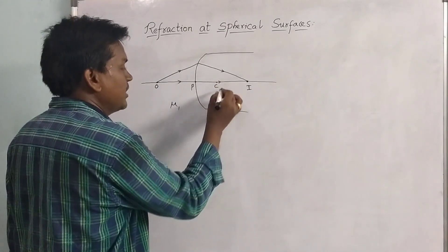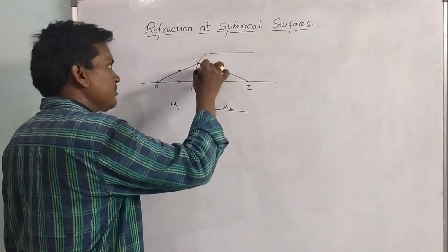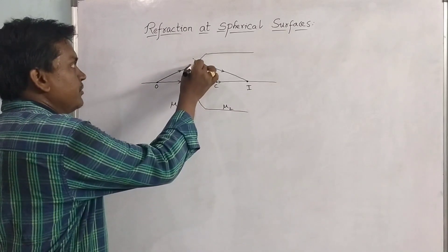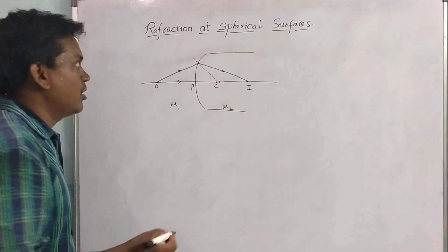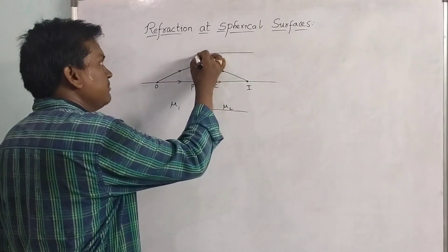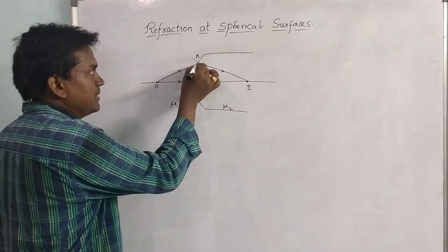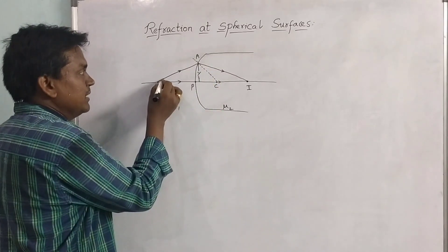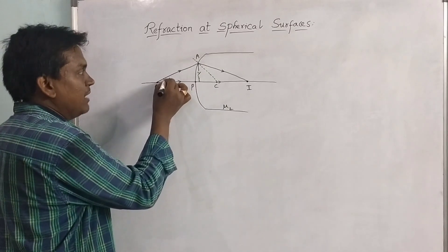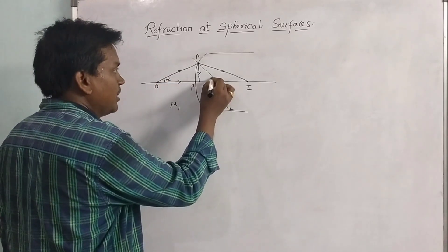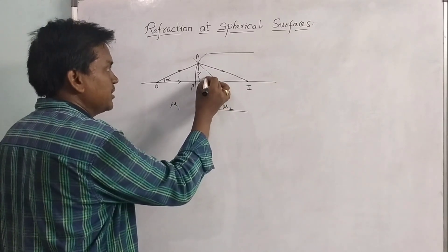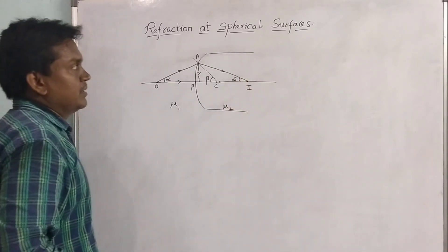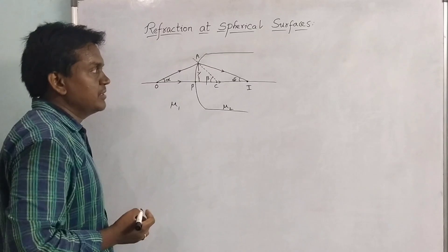Here I am considering this point as the center of curvature. The line joining the point of incidence and the center of curvature is called the normal. The point of incidence is named A, and the distance between A and the principal axis is Y. The incident ray makes angle alpha with the principal axis, the normal makes angle beta with the principal axis, and the refracted ray makes angle delta with the principal axis.